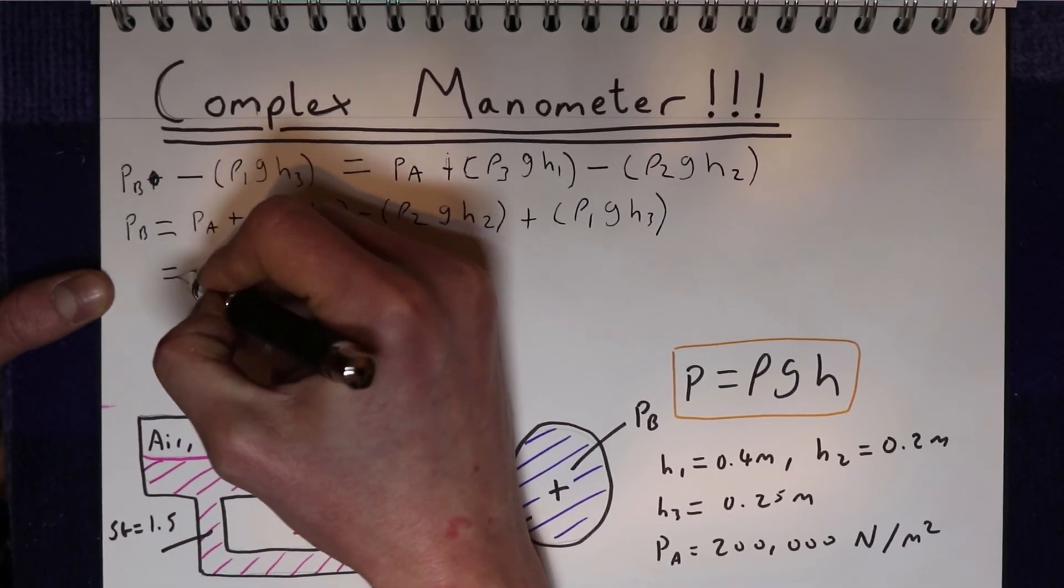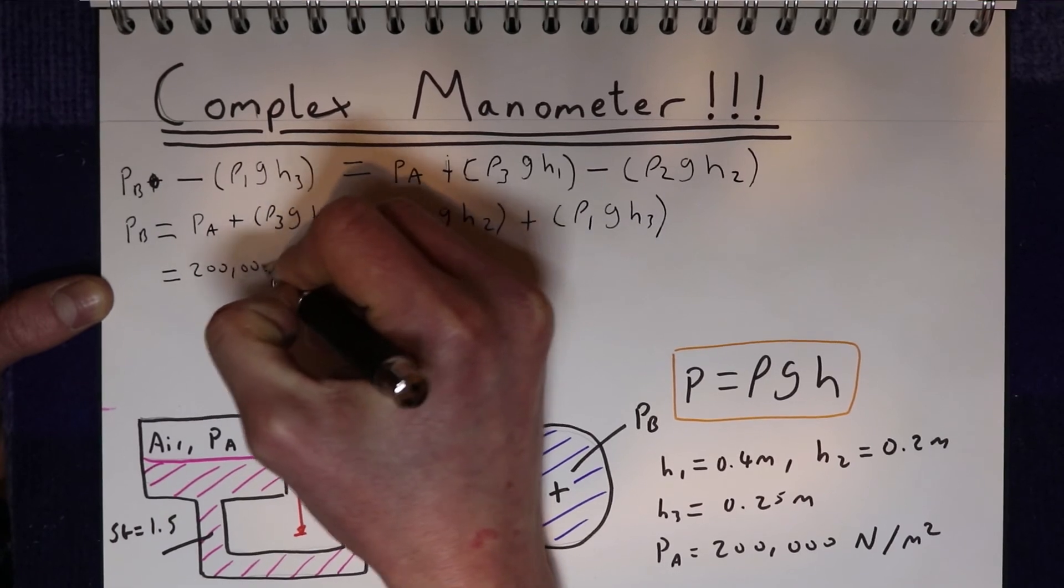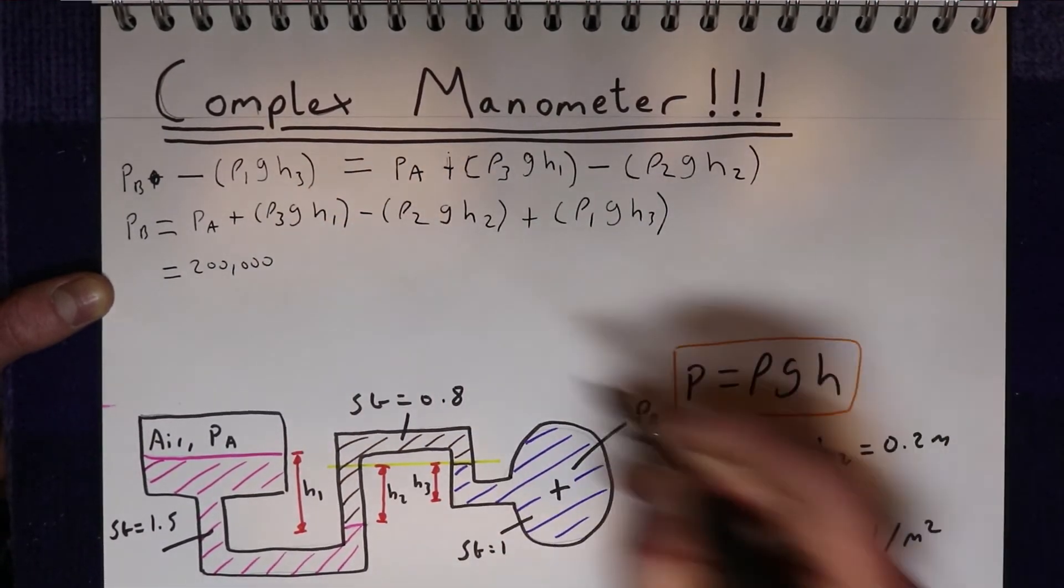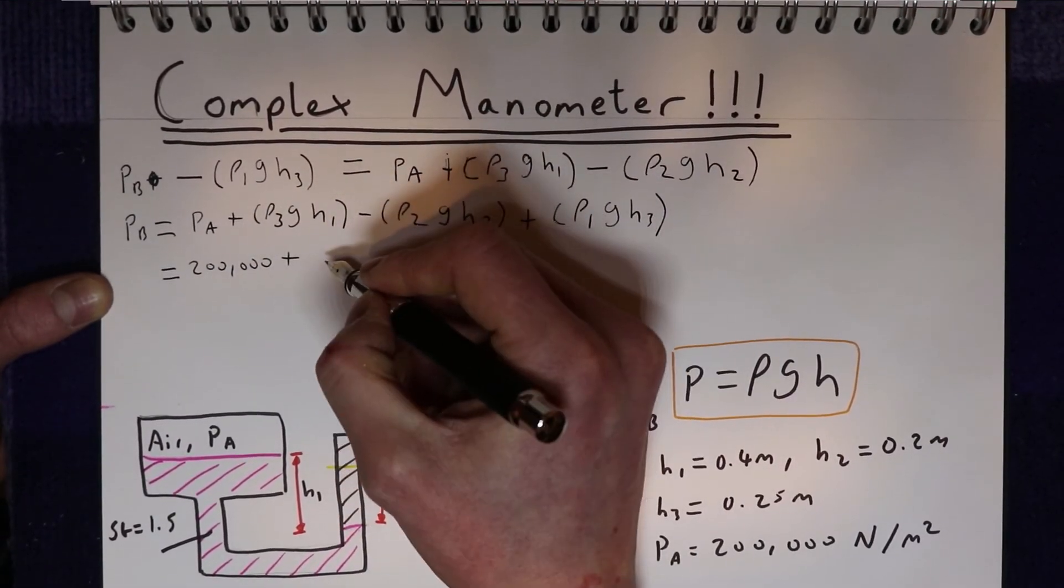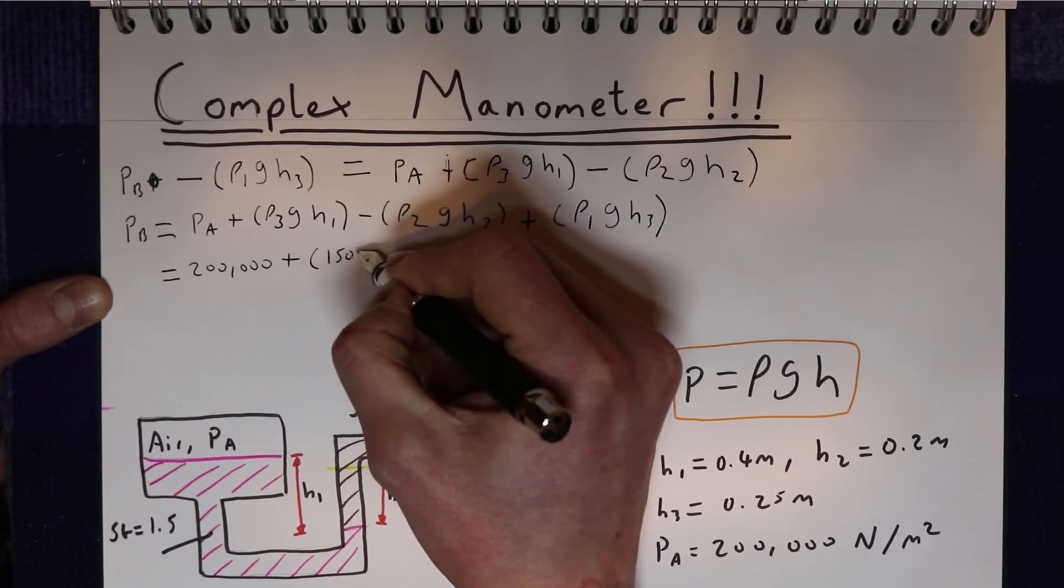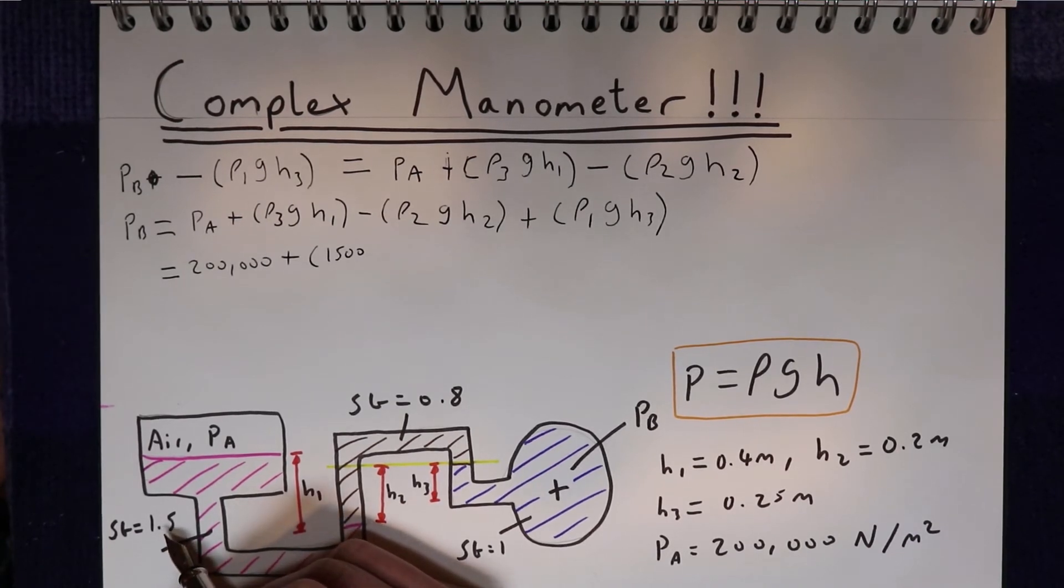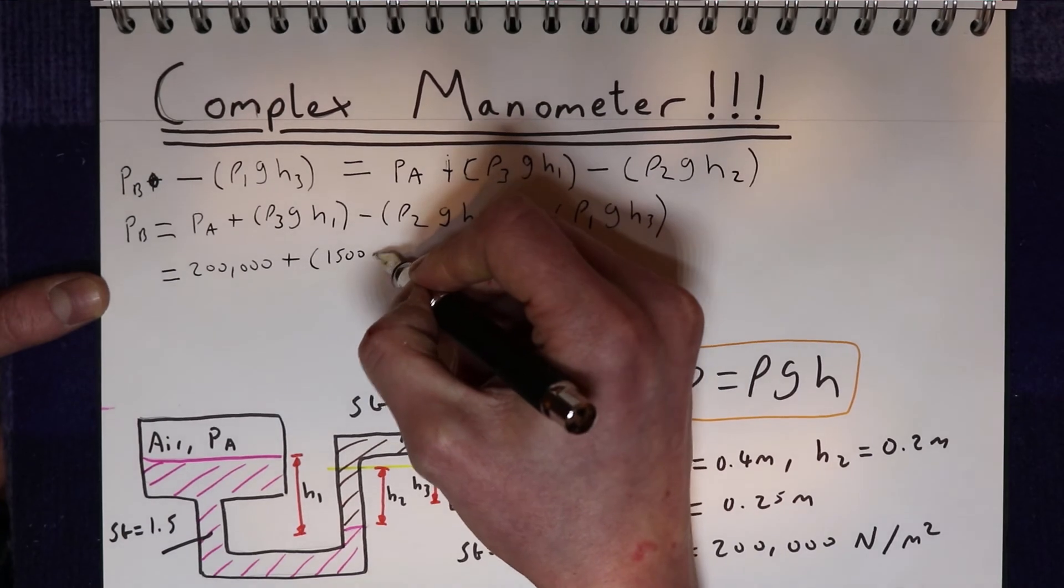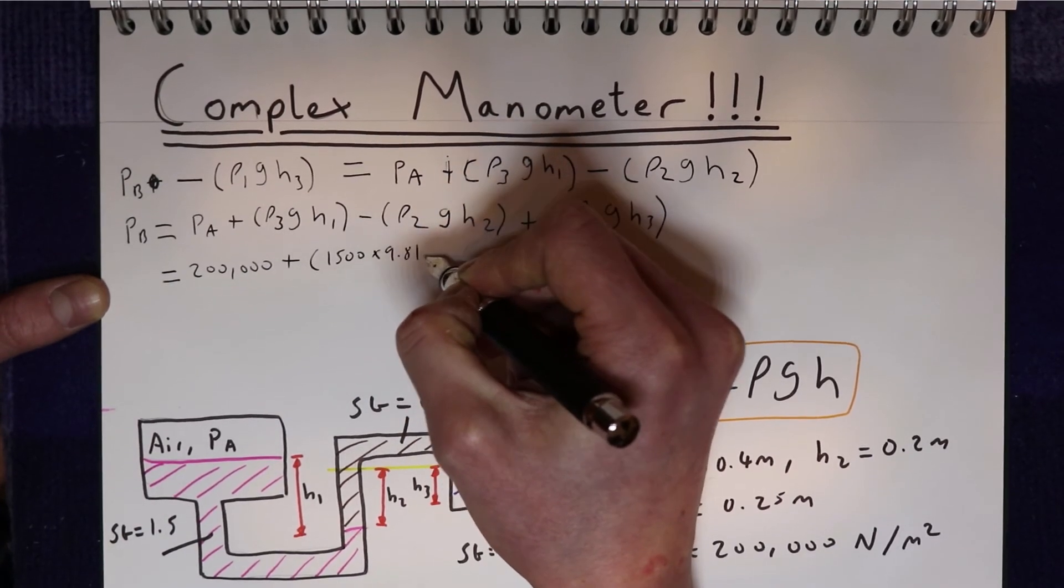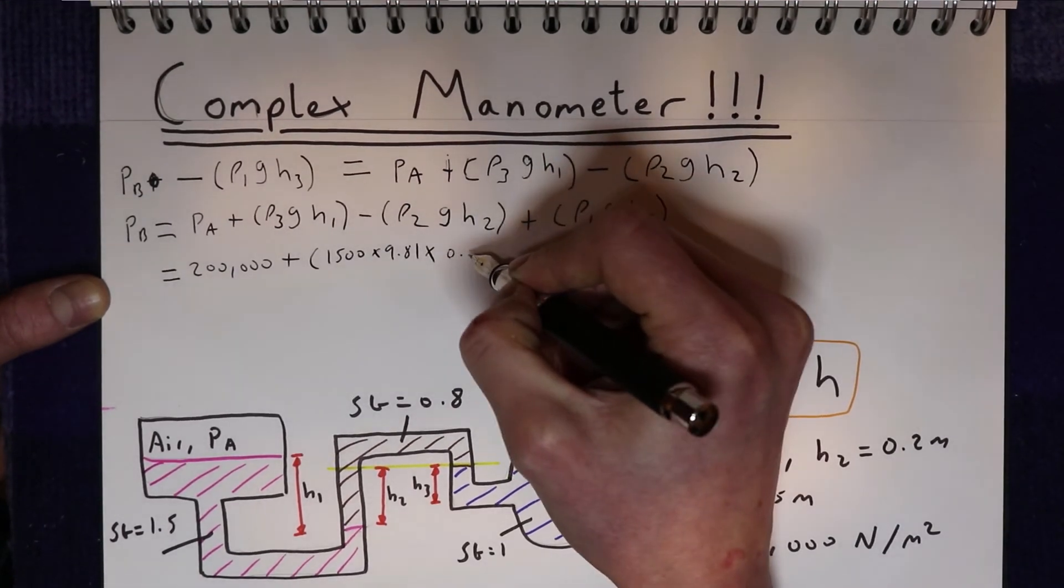And if we plug the numbers into this equation, PA is 200,000 newtons per meter squared. Density 3 is going to be 1,500 because the specific gravity is 1.5, so the density is 1.5 times the density of water, times 9.81 times h1, which is 0.4.